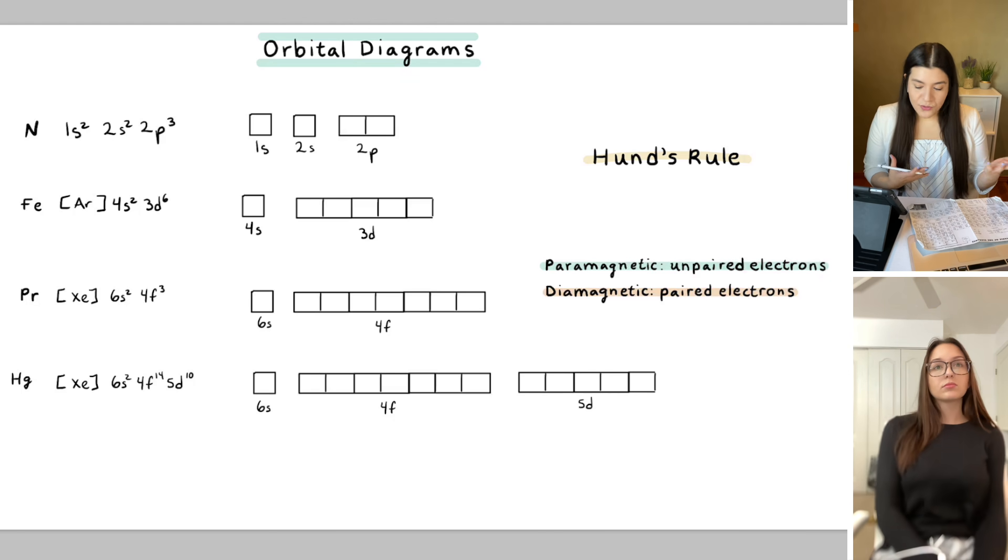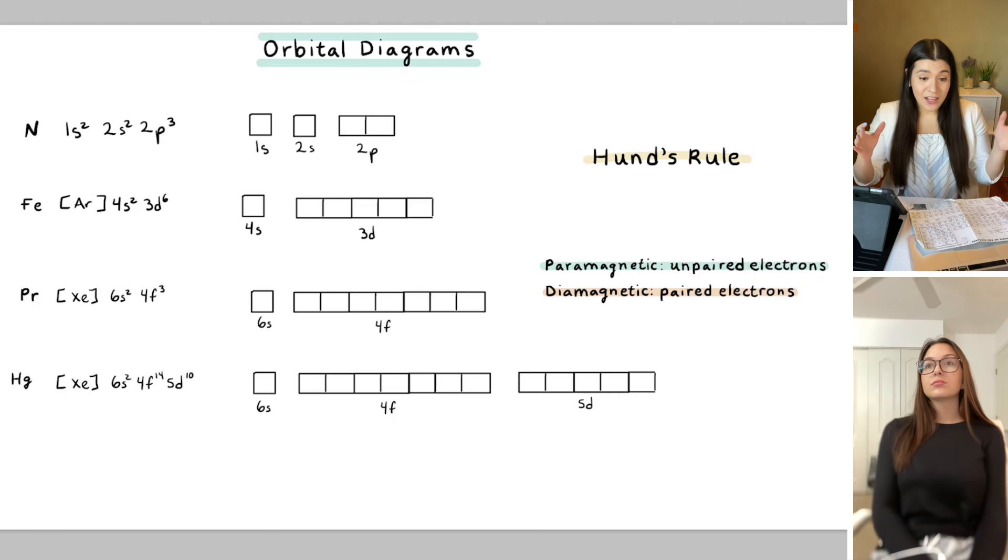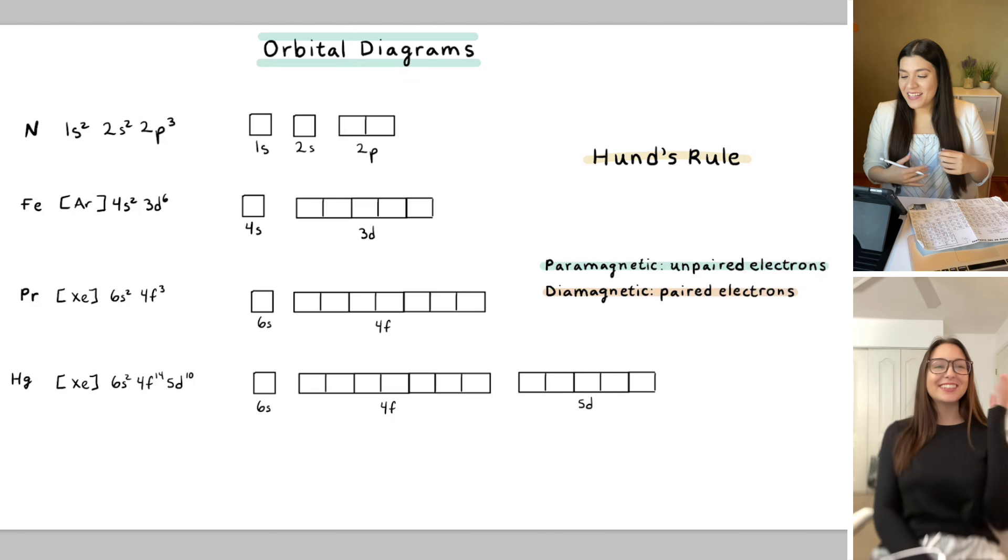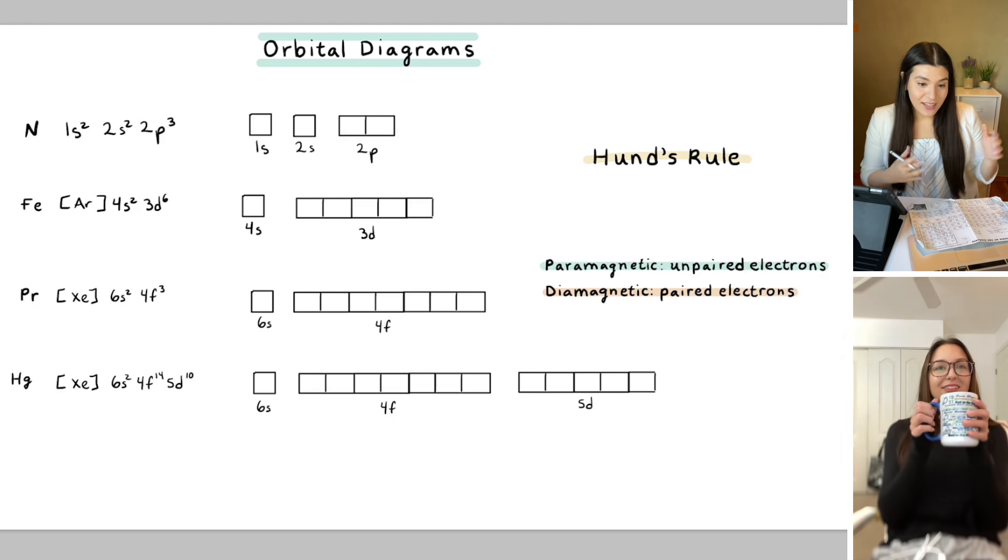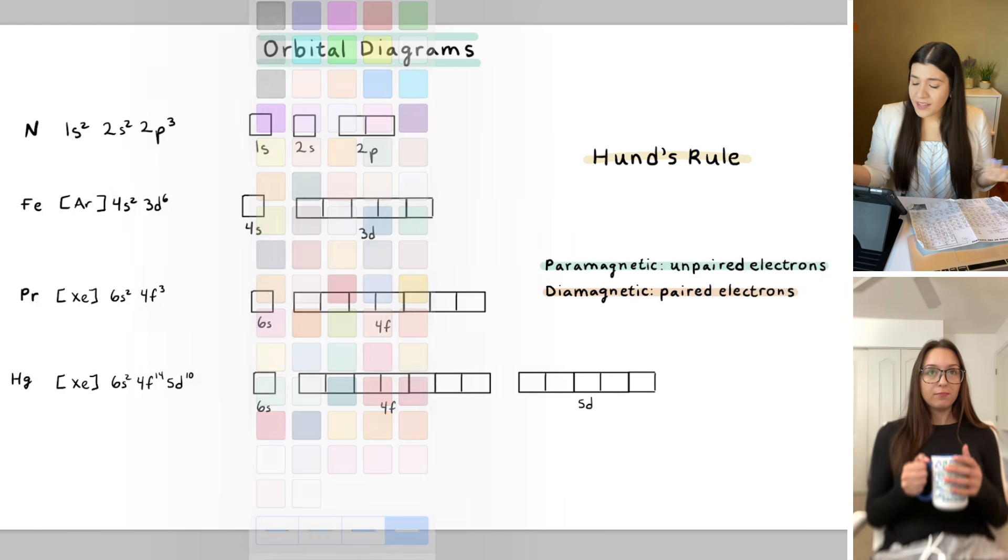So you should have gone over Hund's Rule. Essentially, it's just saying that electrons do not like to be in the same orbitals if they don't have to. Think of it like if you're in an elevator, someone isn't just gonna, it's an empty elevator and you're just in it. Someone isn't literally going to stand right next to you. They're going to stand at the opposite side of the elevator. And if they do, they're weird. Get out. But that's essentially what electrons are doing here. They don't like to be next to each other because they repel each other. So that's essentially Hund's Rule.